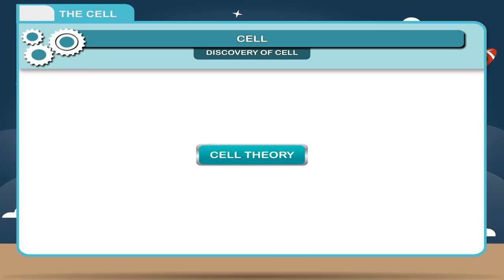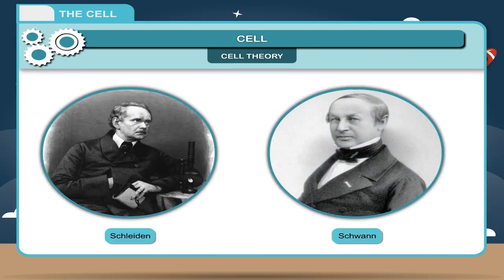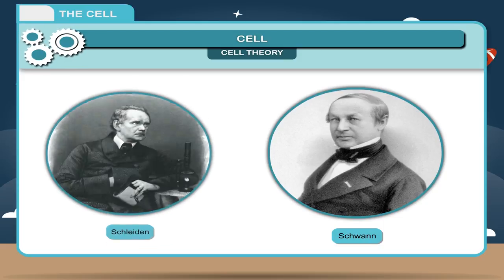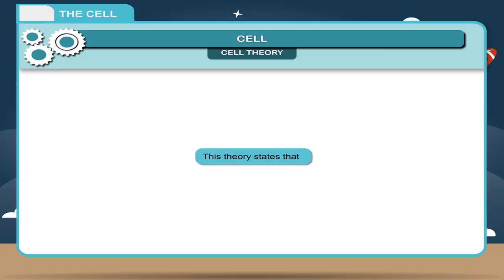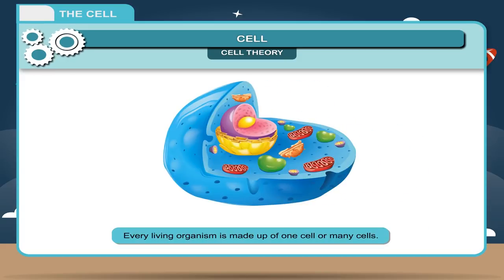Cell theory. This cell theory was jointly put forth by two German scientists, Schleiden and Schwann, 1839. This theory states that: one, every living organism is made up of one cell or many cells. Two, a cell is the structural and functional unit of a living organism. Three, new cells arise by the division of pre-existing cells.